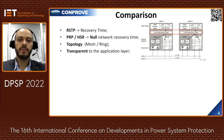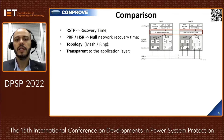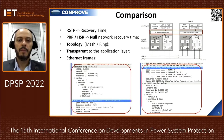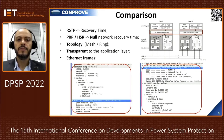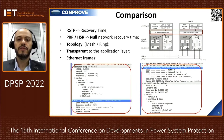An important aspect to consider about both PRP and HSR is that they are transparent to the application layer. Regarding where the link tag is located in the frame structure: in PRP, the tag is located at the end of the frame, as shown in the figure on the left. In HSR, the tag is located in the middle of the frame, as shown in the figure on the right.